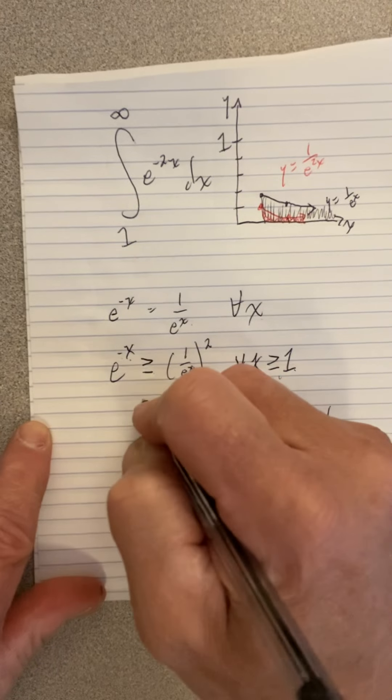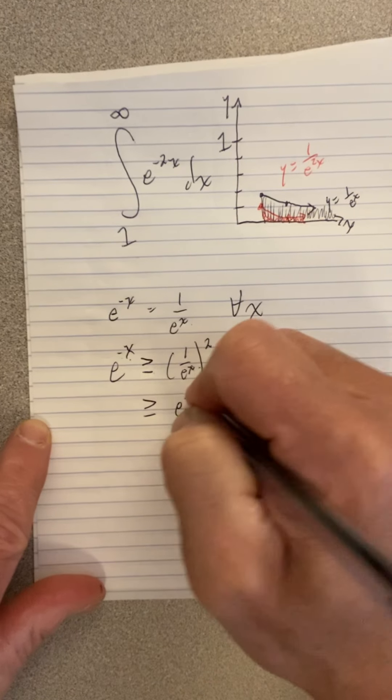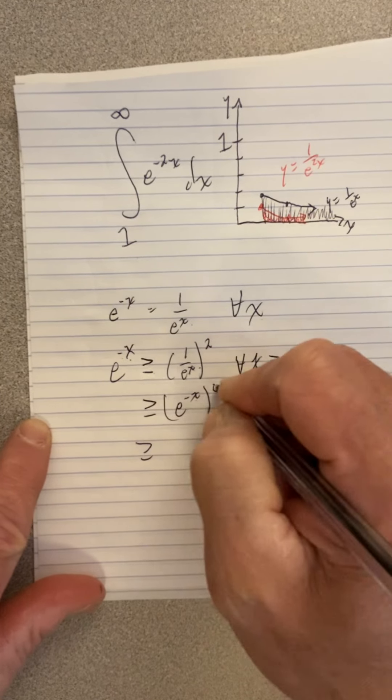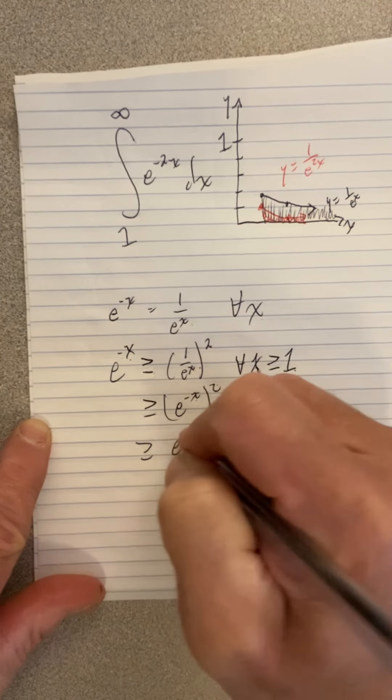Now, we know that this is the same thing as e to the negative x squared, which is the same thing as multiply the exponents. So we get e to the negative 2x.